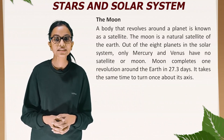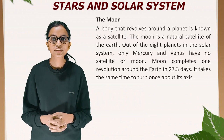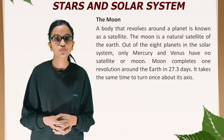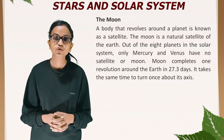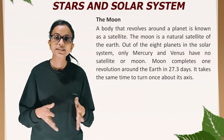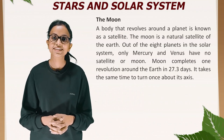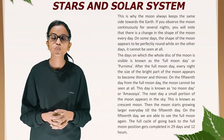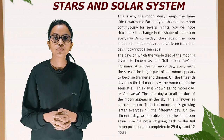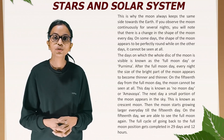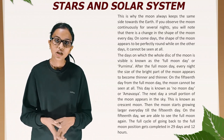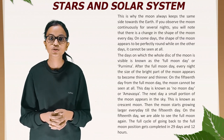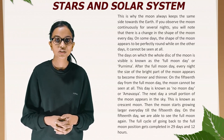A body that revolves around a planet is known as a satellite. The Moon is a natural satellite of the Earth. Of the eight planets in the solar system, only Mercury and Venus have no satellite or moon. The Moon completes one revolution around the Earth in 27.3 days and takes the same time to spin about its own axis — this is why the Moon always keeps the same side towards the Earth. If you observe the Moon continuously for several nights, you will note a change in its shape every day. On some days the shape of the Moon appears perfectly round, while on other days it cannot be seen at all.